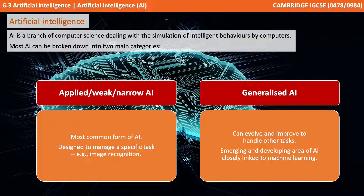Then we have generalized AI. This can evolve and improve to handle other tasks. This is emerging and a popular developing area of AI, closely linked to machine learning.